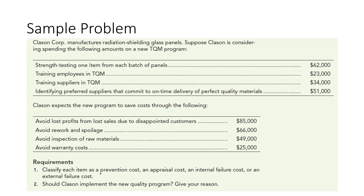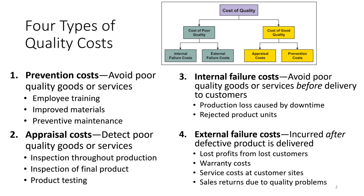The problem asks us to classify each item as a prevention cost, an appraisal cost, internal failure cost, or an external failure cost. Then we need to determine whether Clayson should implement the new quality program and support our reasoning. So let's go back and review the four types of quality costs found in a cost of quality report.